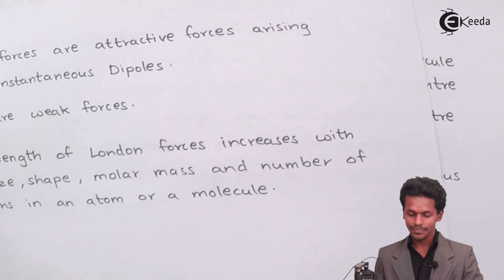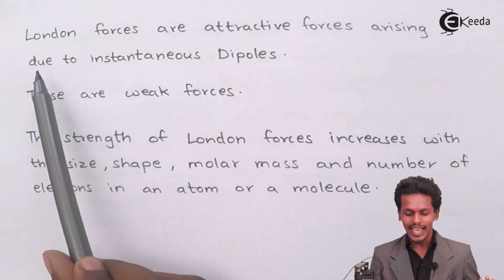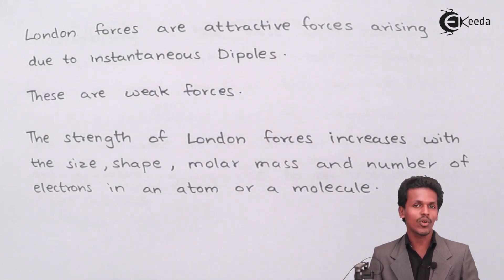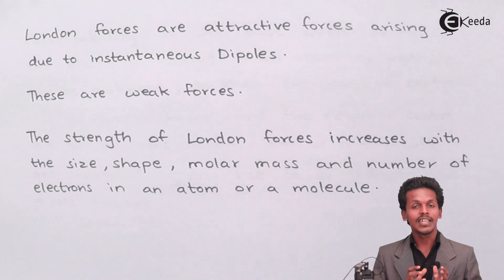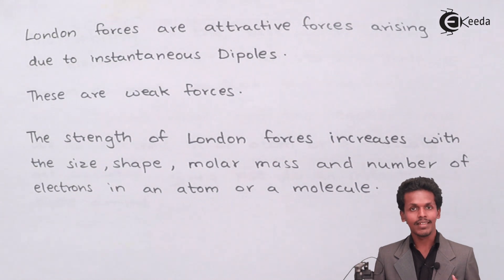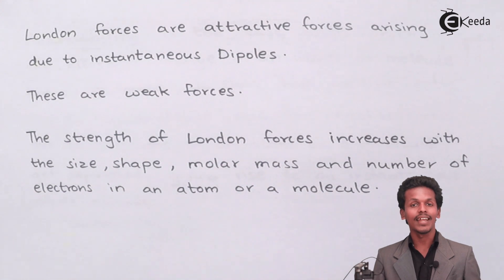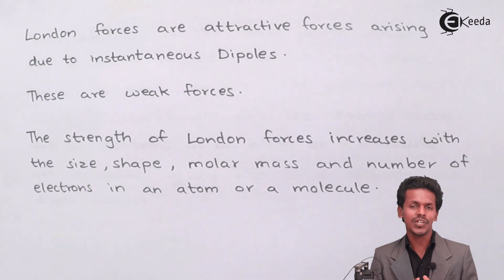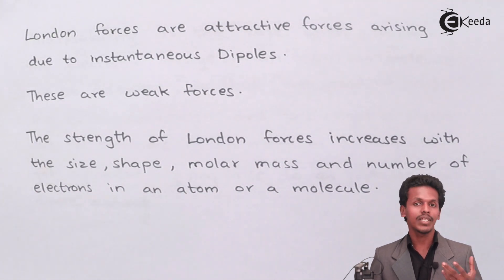London forces are attractive forces arising due to the instantaneous dipole moment. These are very weak forces because they are observed between non-polar molecules. Comparing all interactions: dipole-dipole has the strongest interaction, followed by ion-dipole, and then London force is the weakest. It has a very weak force of attraction because there is no specific charge separation, and the electrostatic force is therefore much less compared to the other kinds of interactions.